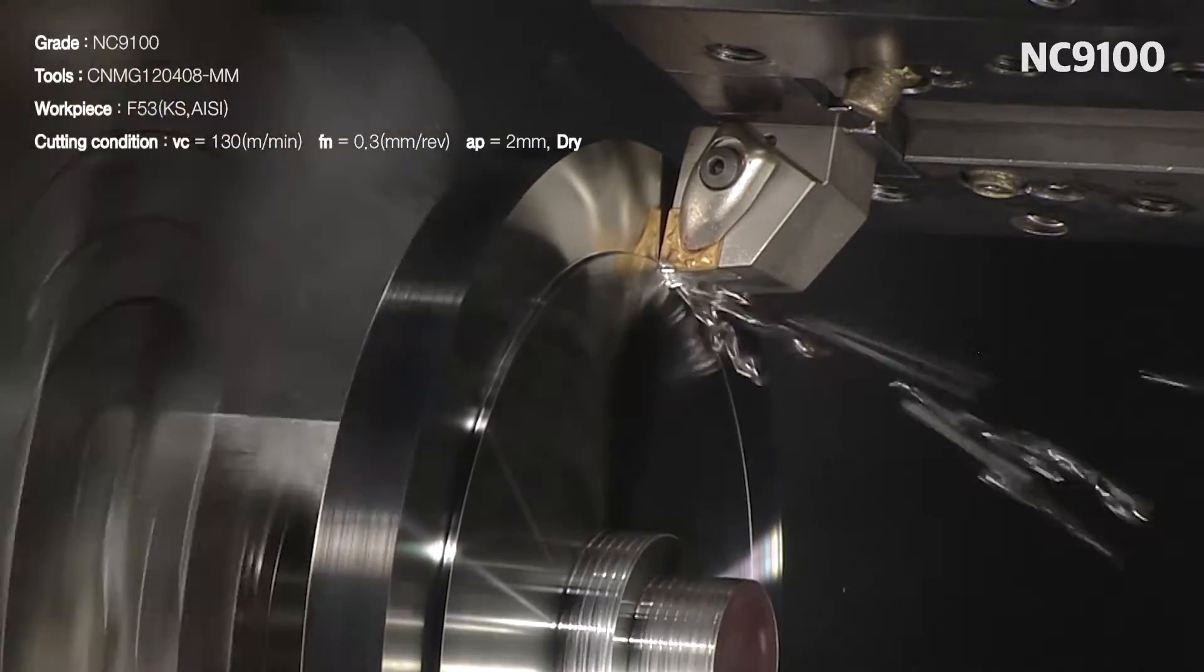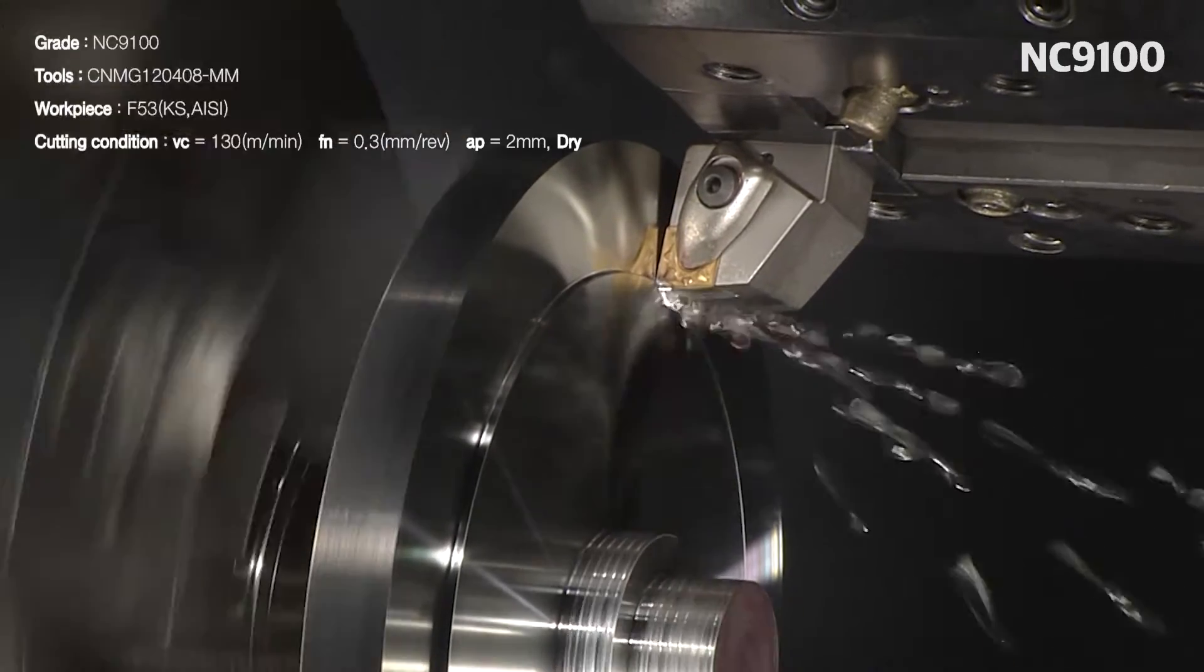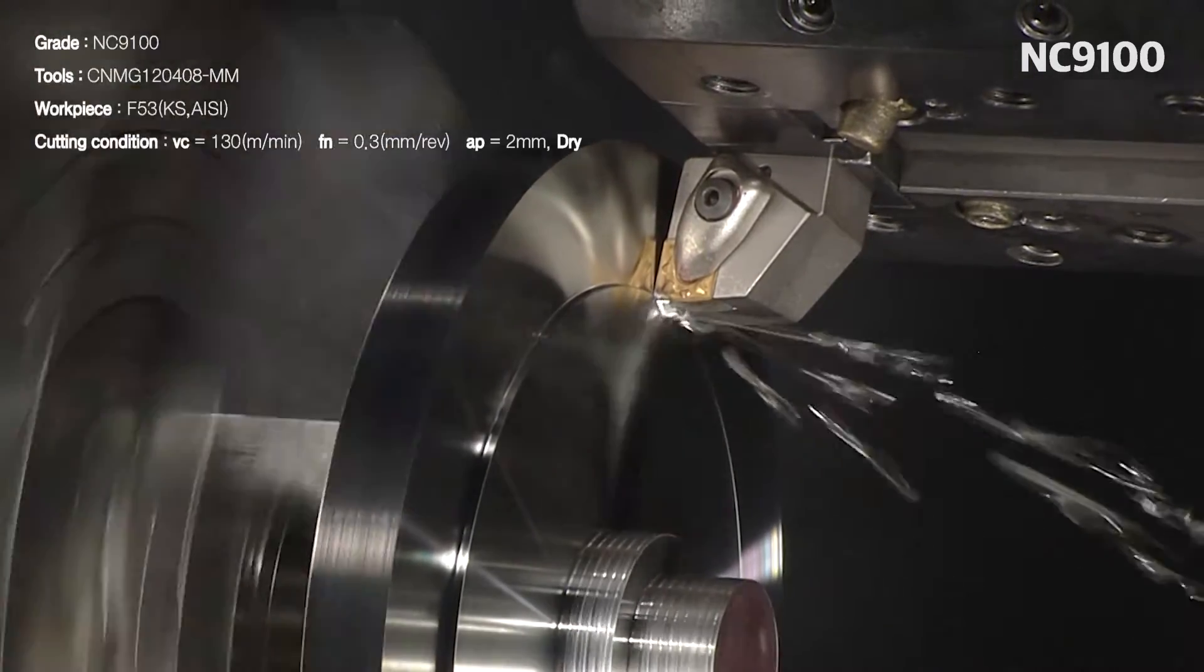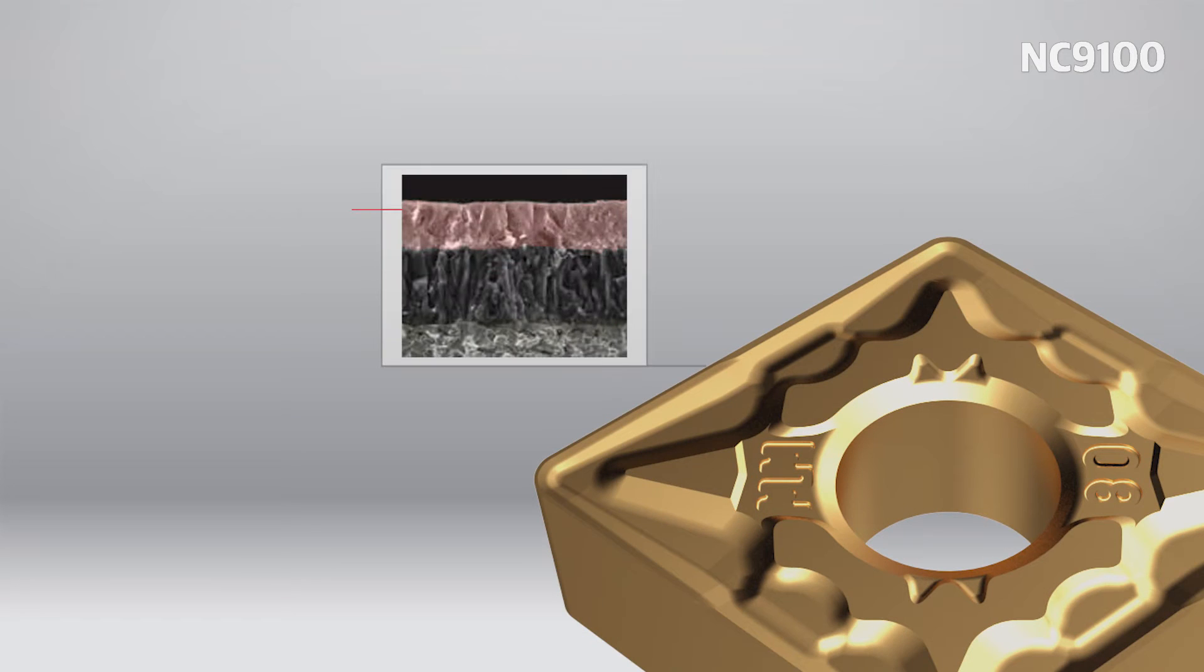It was optimized for machining speed, feed, and interruption level. Heat resistance was improved by applying a new alumina layer and coating film with improved chipping resistance.